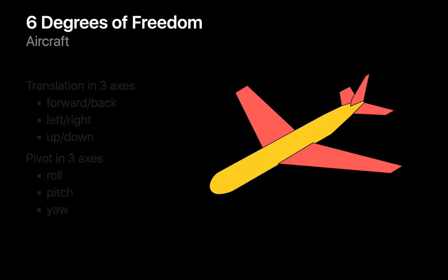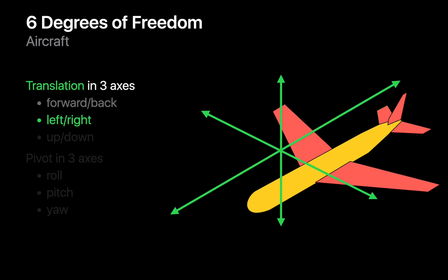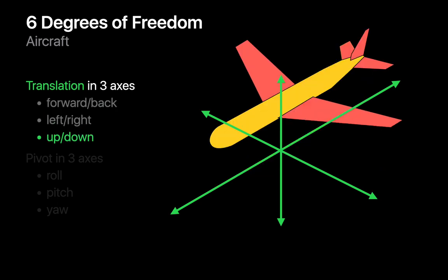Probe movements. There are six degrees of freedom when flying an airplane. Your airplane can translate in three axes: forward and back, left and right, up and down.